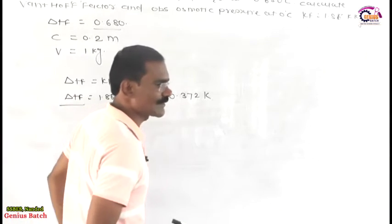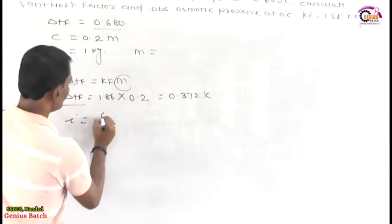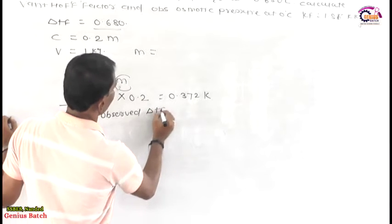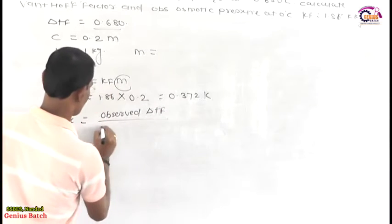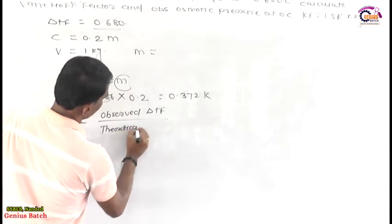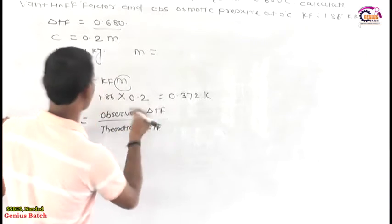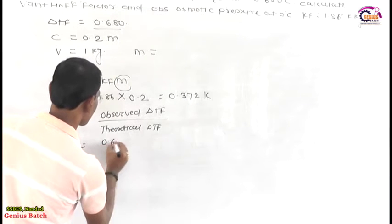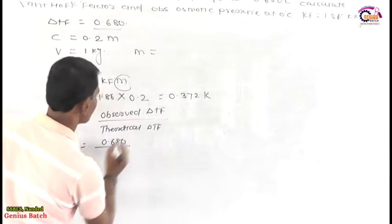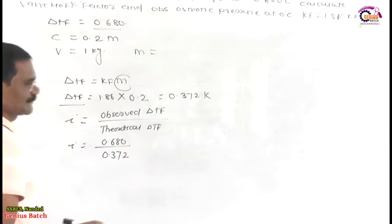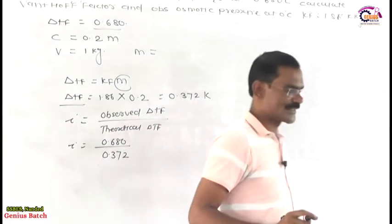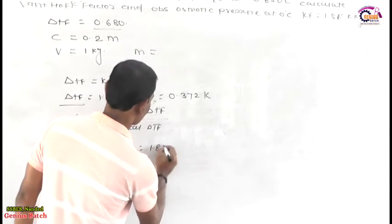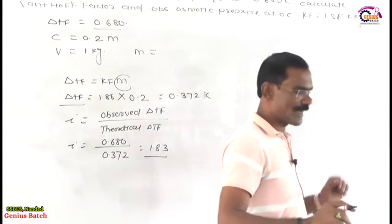Therefore, how to calculate the van't Hoff factor? i equals observed delta Tf divided by theoretical delta Tf. The observed delta Tf is 0.680, and theoretical is 0.372. Therefore i equals 0.680 divided by 0.372, which gives the value of i as 1.83.